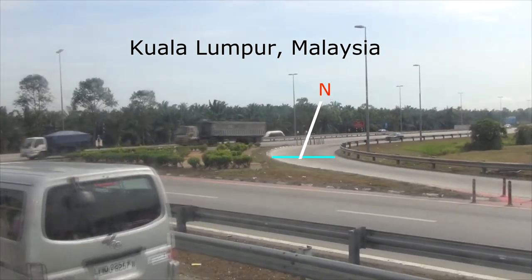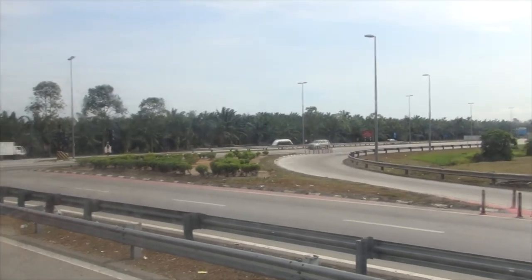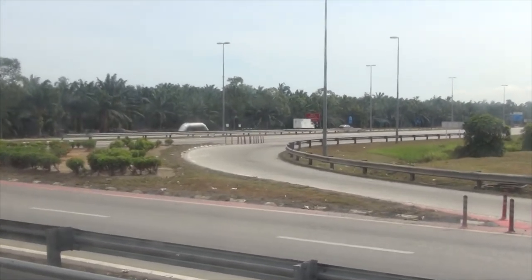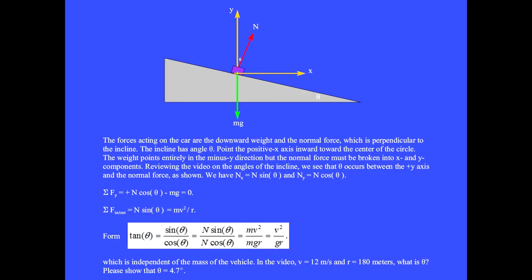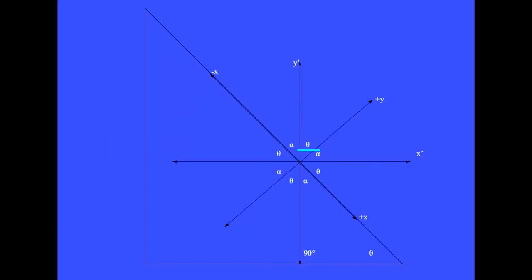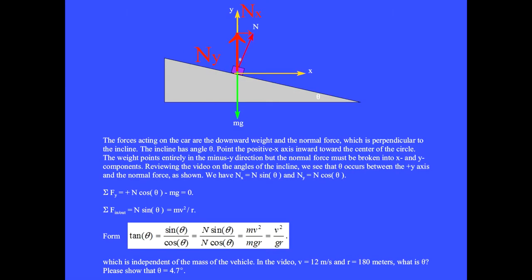This circular roadway is banked by a few degrees. Even if a roadway is covered in ice so that friction is zero, the inward component of the normal force can supply the centripetal force to make the car move in a circle. The forces acting on the car are the downward weight and the normal force, perpendicular to the incline, which has angle theta. The x-component of the normal force equals N sine theta (opposite the angle), and the y-component equals N cosine theta (adjacent to the angle).